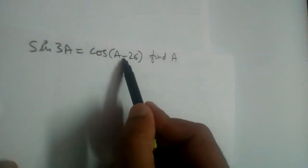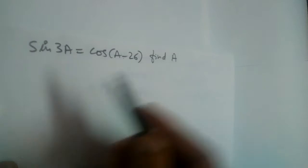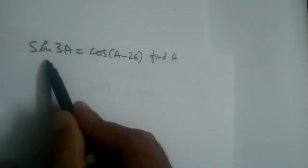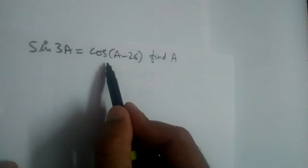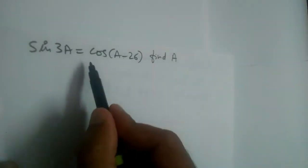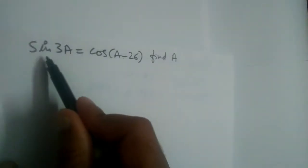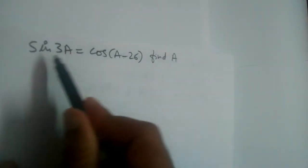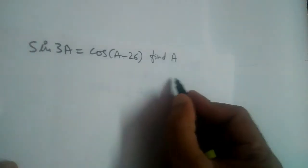Sine 3a equals cos(a - 26). Find a. On the LHS and RHS, we should have the same trigonometric ratio. Here they are different - one is sine, one is cos. So let us change sine to cos.